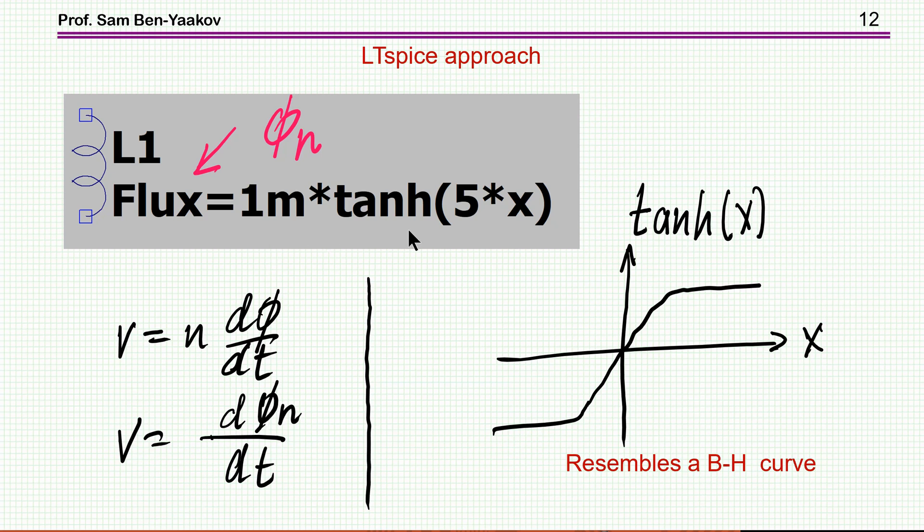Now, in this example, they've used the tangent hyperbolic function, which looks like this graphically, and this sort of resembles a BH characteristic. So this is a good template to approximate the behavior of a given ferrite core. But this is, of course, not a must.